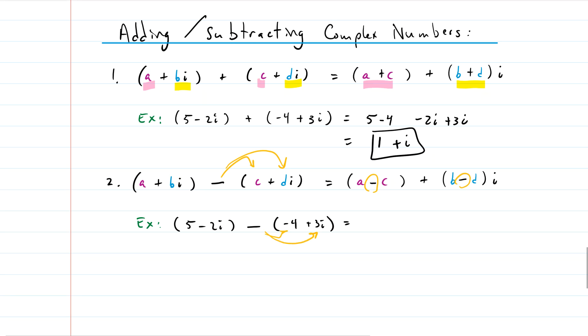So five minus negative four gives us five plus four, and then negative two i and negative a positive three i gives us a negative three i. So that gives us nine, and then negative two minus three gives us negative five i, and we're done.